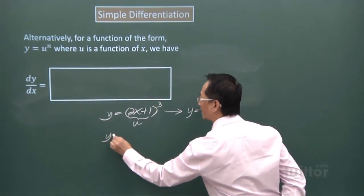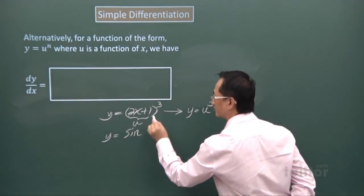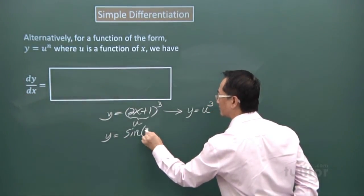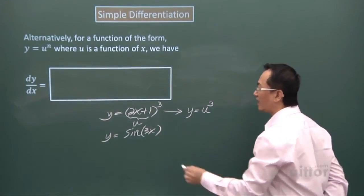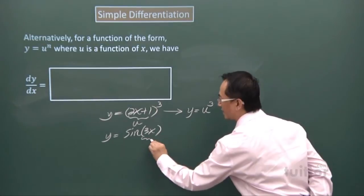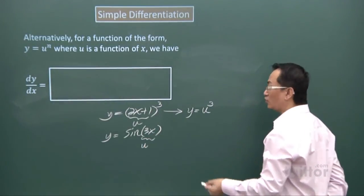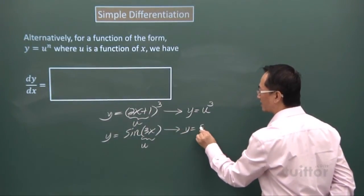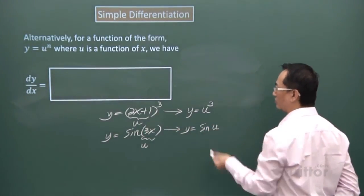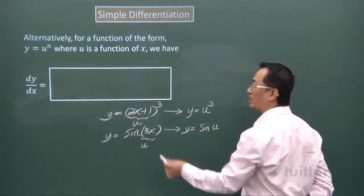Or you can have cases like this. You can see this 3x here is taken as a u, so you can have y equals sine u. So the chain rule can also be applied here.